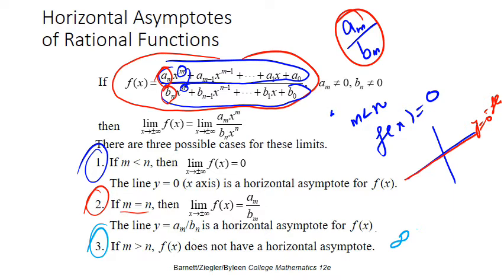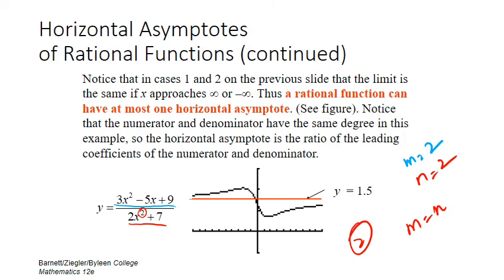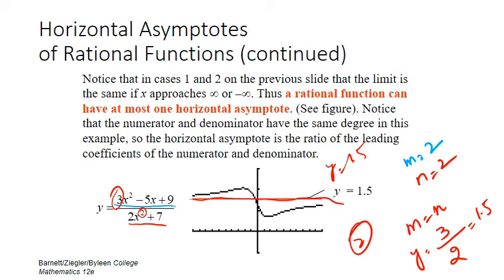Let's solve an example: y equals (3x² minus 5x plus 9) over (2x² plus 7). The maximum power of x in the numerator is m equals 2, and the maximum power of x in the denominator is n equals 2. Since m equals n, this is Case 2. The horizontal asymptote is the ratio of the leading coefficients: 3 over 2, which equals 1.5. So y equals 1.5 is our horizontal asymptote.